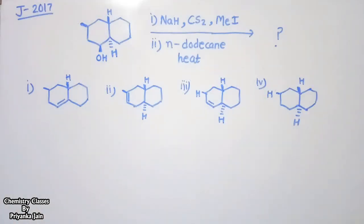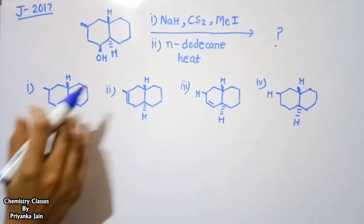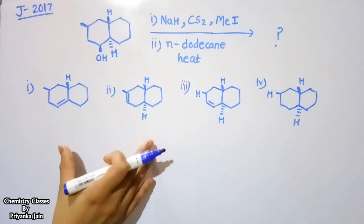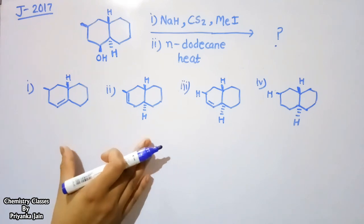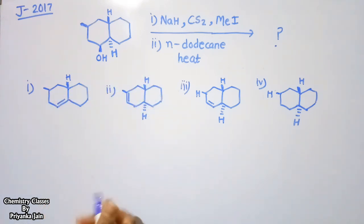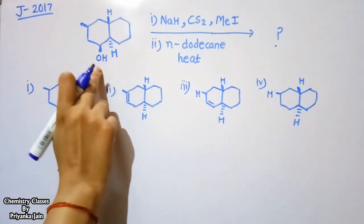This reaction is quite important from the point of view of the exam. I have taken some examples from the CSIR Net exam. This question was asked in June 2017. The question is quite simple — if you know the reaction mechanism of the Chugaev reaction, then you can answer it quite easily. We have been given a compound to analyze.